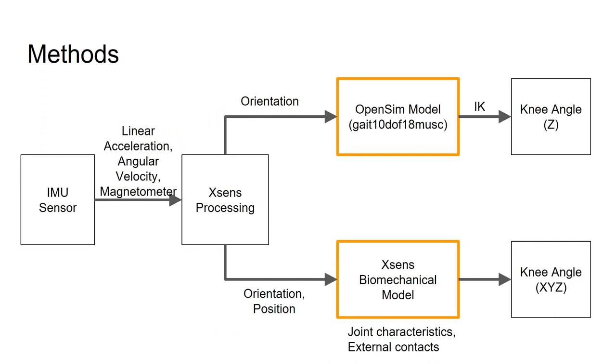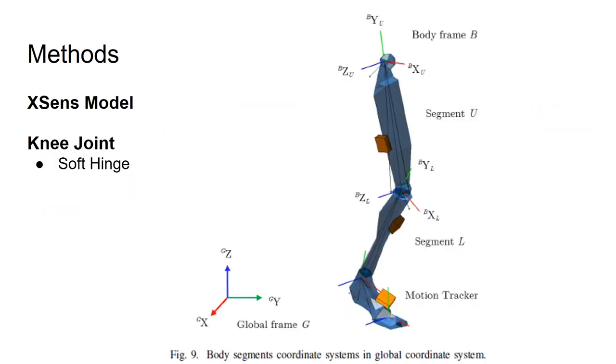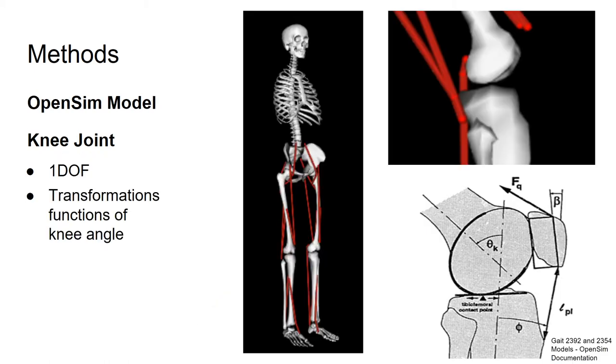The next step in this process is to input the orientation and position data into the biomechanical models. In the XSens pipeline, an unspecified biomechanical model is used, but we were able to find that they use a soft hinge joint to model the knee, meaning that the main axis of rotation is flexion and extension, whereas internal rotation and abduction are limited to a few degrees and thus modeled as statistically more unlikely. The OpenSim knee model is a single degree of freedom model with motion in the sagittal plane. There are femoral, tibial, and patellar transformations, but only as a function of knee angle.